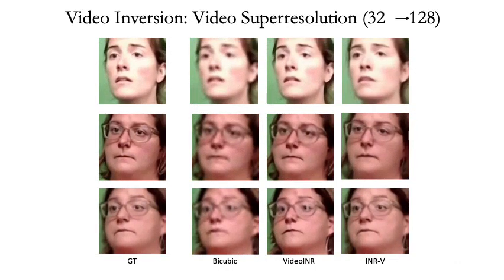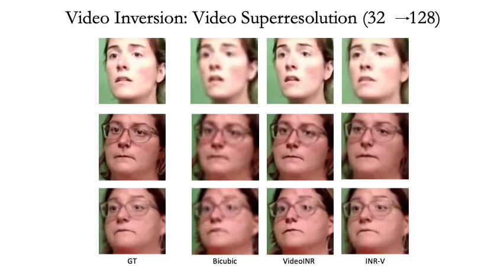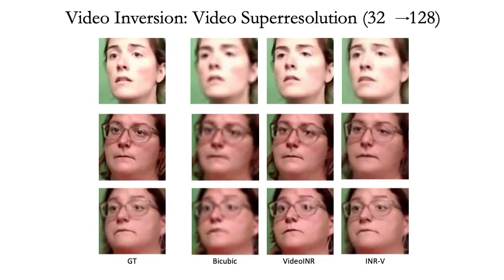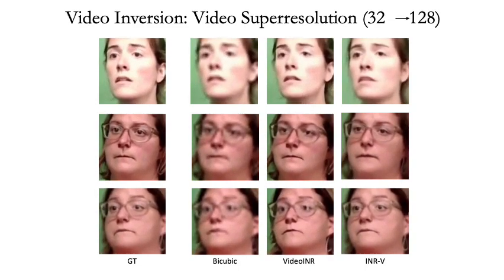Lastly, we look at the task of super-resolution. In INRV, the inversion is done at a resolution of 32 and inference happens at a resolution of 128. As can be seen, the generated videos are often better than both bicubic and VideoINR. Even though VideoINR has sharper outputs, INRV has smoother and more natural outputs.